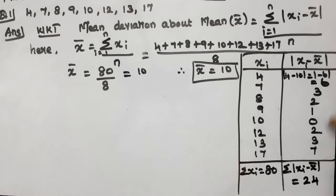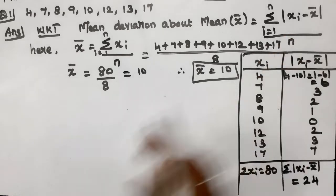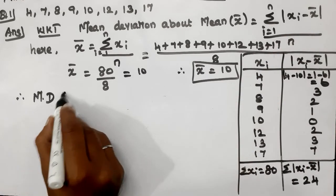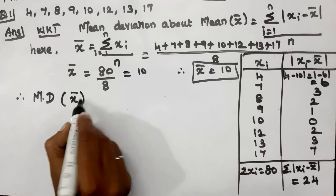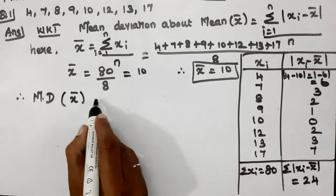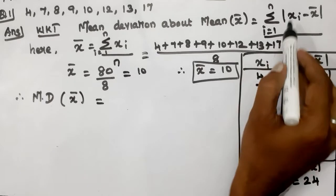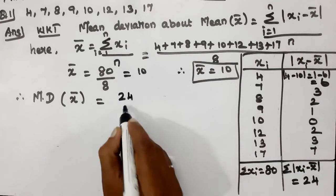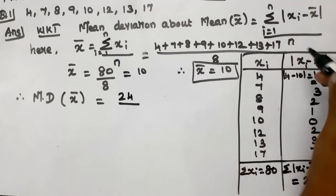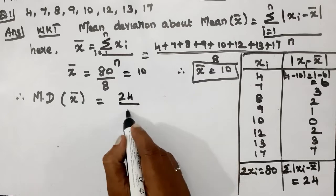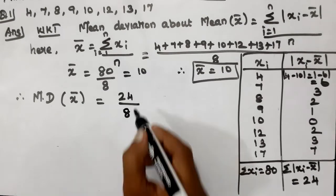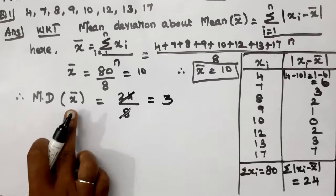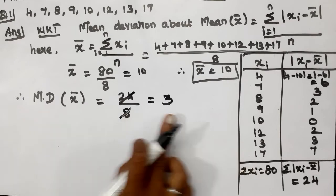The total is 24. Therefore, mean deviation about mean equals summation of |x_i - x_bar| divided by n, which is 24 divided by 8, giving mean deviation equal to 3.